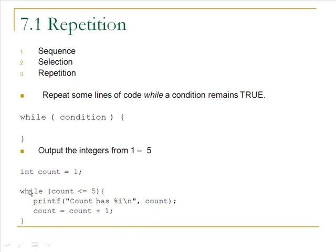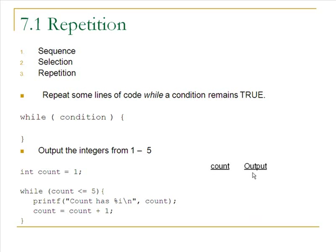Here's an example of a while loop. We have the condition count is less than or equal to 5. We have a variable count, the stop condition for the repetition, and the compound statement which will be executed over and over. When you look at a piece of code that has repetition in it, it's almost impossible to know what it's really doing, so walk through the code as if you were the machine. Start by writing down the names of the variables and the output.